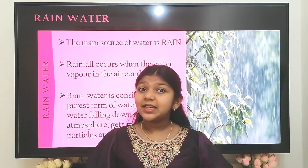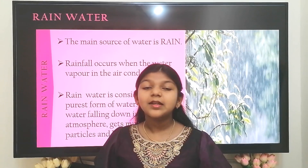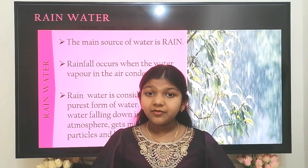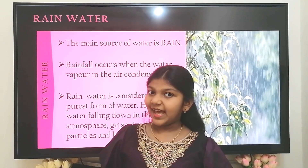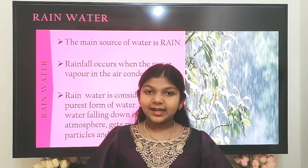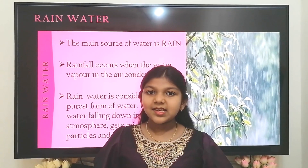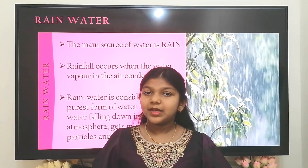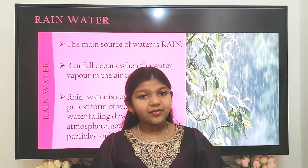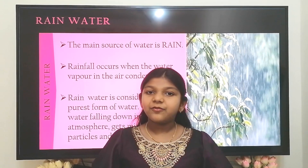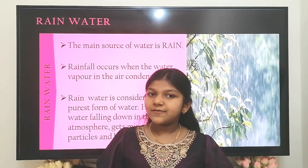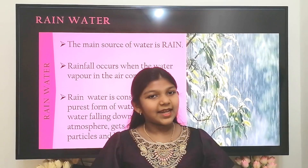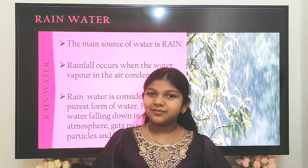Do you know when rainfall occurs? Rainfall occurs when the water vapor present in the air condenses. Rain water is considered as one of the purest forms of water. However, while it falls down through the atmosphere, it gets mixed with dust particles and gets polluted.